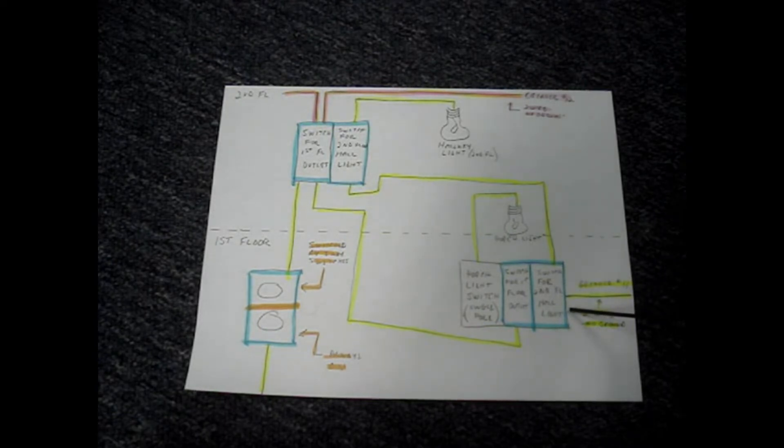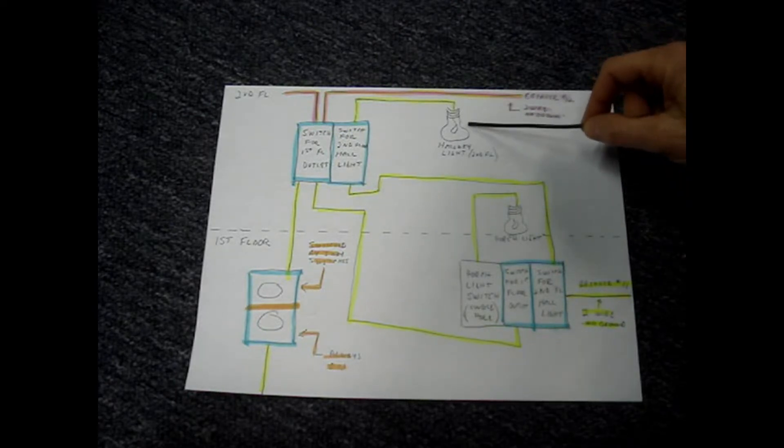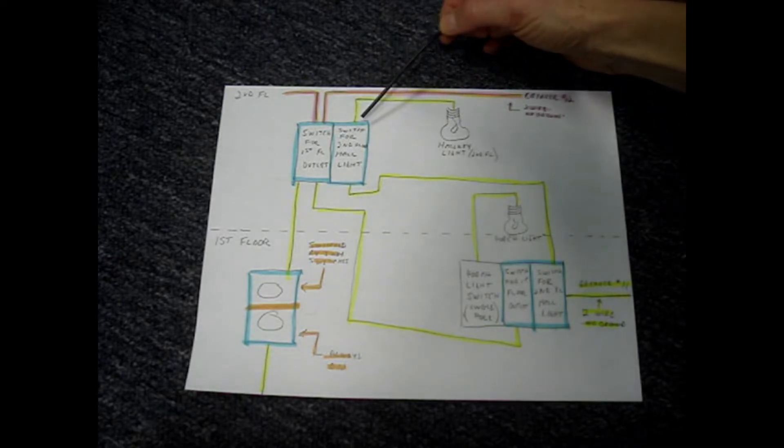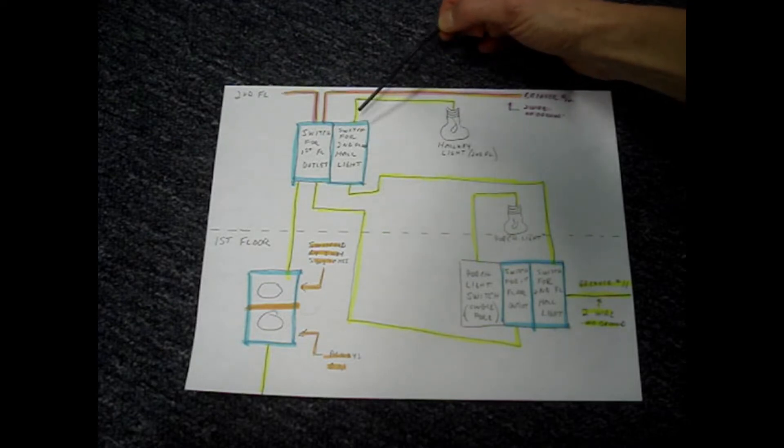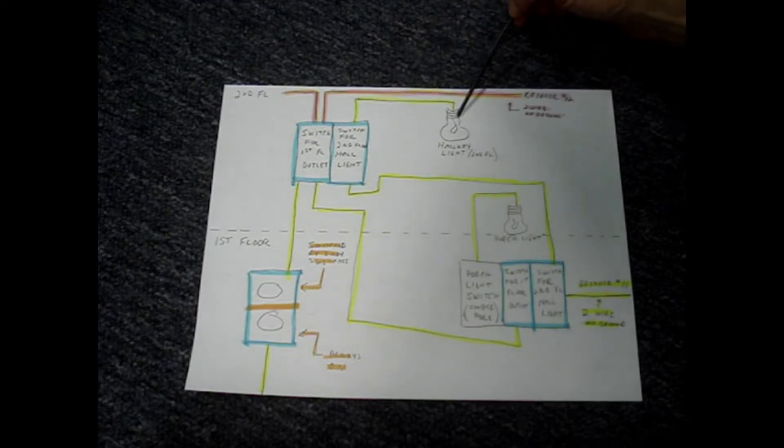One of the switches is located on the first floor and it controls a hallway light on the second floor. The companion to that switch is one that's located at the top of the hallway on the second floor and of course that also controls the hallway light.